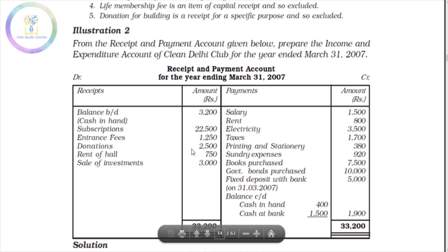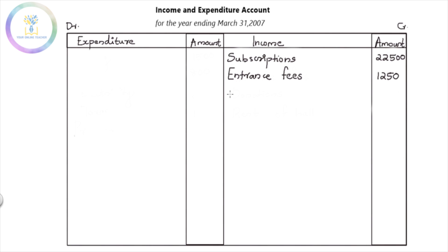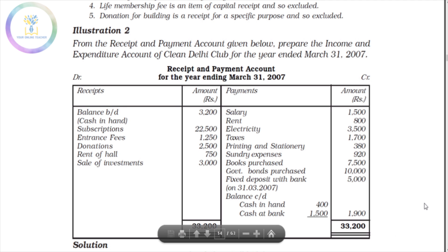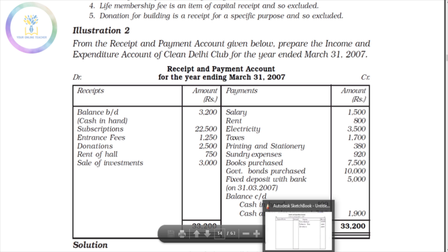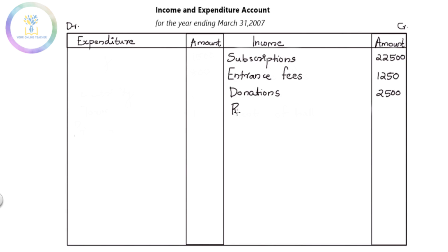The next item is donation. Donation is $2.50. If the donation is for sports, we will be able to explain it accordingly. The next item is the rent of the hall. The rent of the hall is for a club, and it is of revenue nature, so we will treat it as a recurring account.